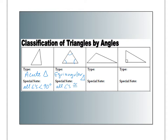The third type of triangle is an obtuse triangle. This angle up here is obtuse. To be an obtuse triangle, you just need one angle greater than 90 degrees.